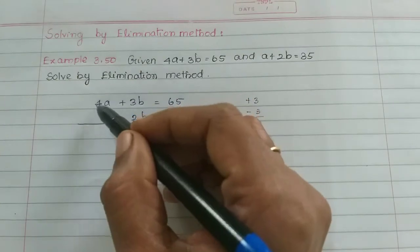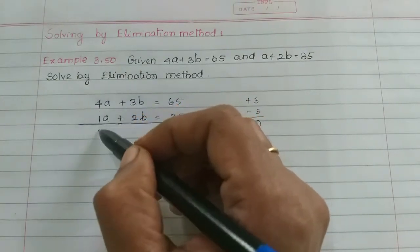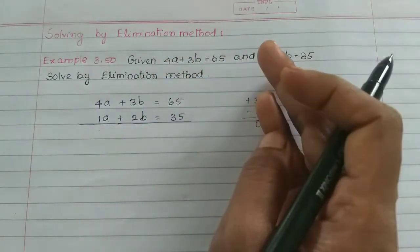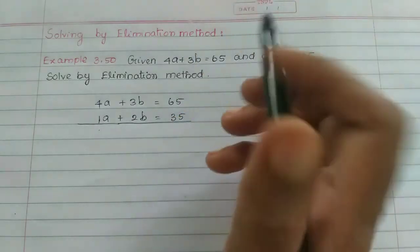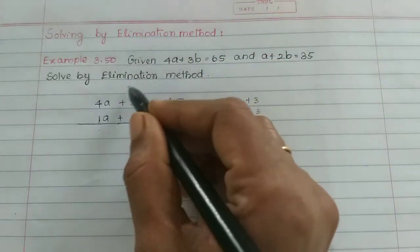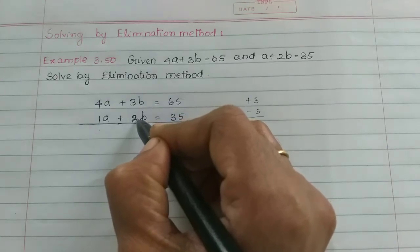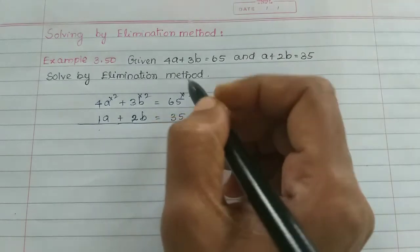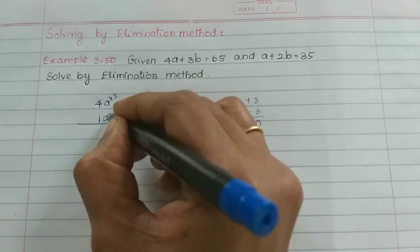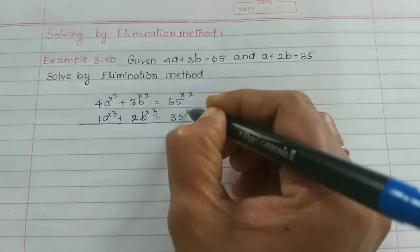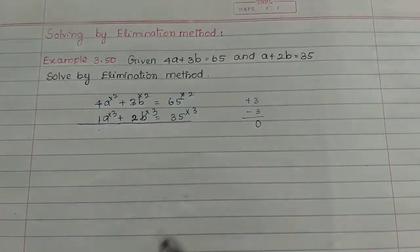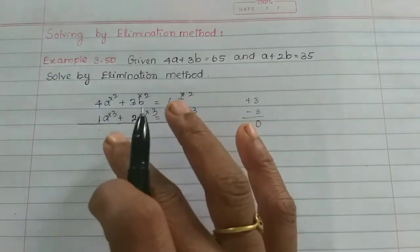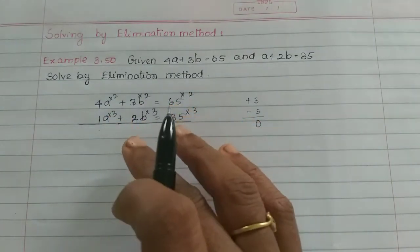There is a b coefficient in each equation. We need to match the b coefficients so that they are equal, allowing us to eliminate b.